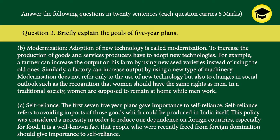B) Modernization: Adoption of new technology is called modernization. To increase production of goods and services, producers have to adopt new technologies. For example, a farmer can increase output by using new seed varieties, and a factory can increase output by using new types of machinery. Modernization does not refer only to use of new technology but also to changes in social outlook, such as the recognition that women should have the same rights as men — in a traditional society, women are supposed to remain at home while men work.